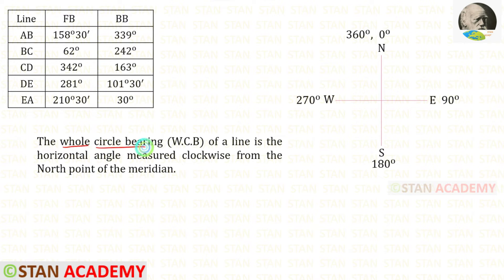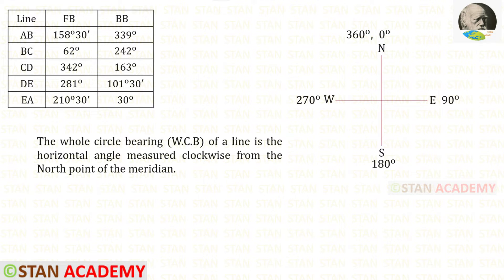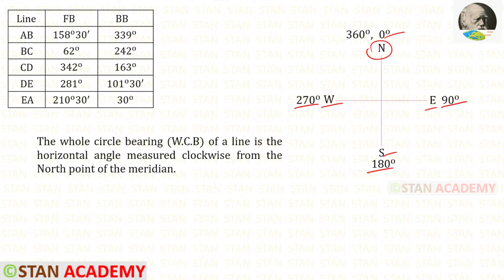Using the fore bearings we can draw the traverse. These readings are given in whole circle bearing. The whole circle bearing of a line is the horizontal angle measured clockwise from the north point of the meridian. So all readings start from the north: 0° at north, 90° at east, 180° at south, 270° at west, and 360° again at north. All readings are taken from north in the clockwise direction.